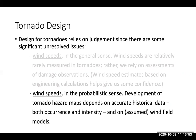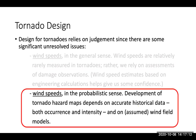One of the challenges we have is with a damage-based scale: if you have a monster tornado but it hits nothing but farmland, it doesn't get rated at the true wind speed that occurred. So there's going to be some bias in these analyses based on lack of data.